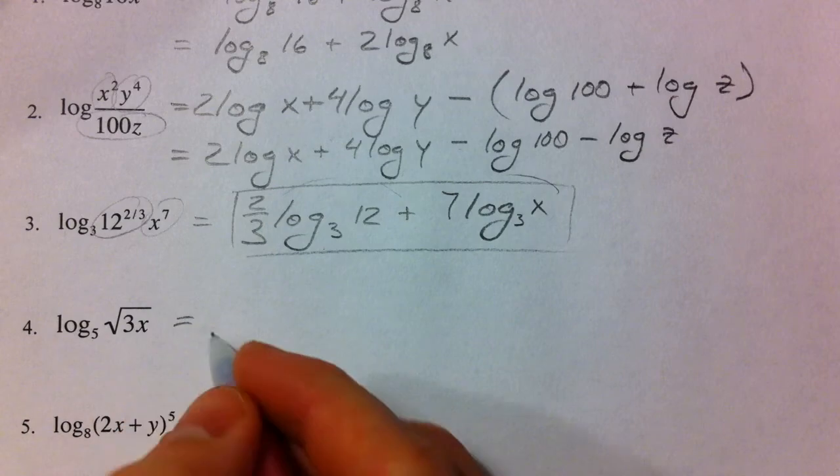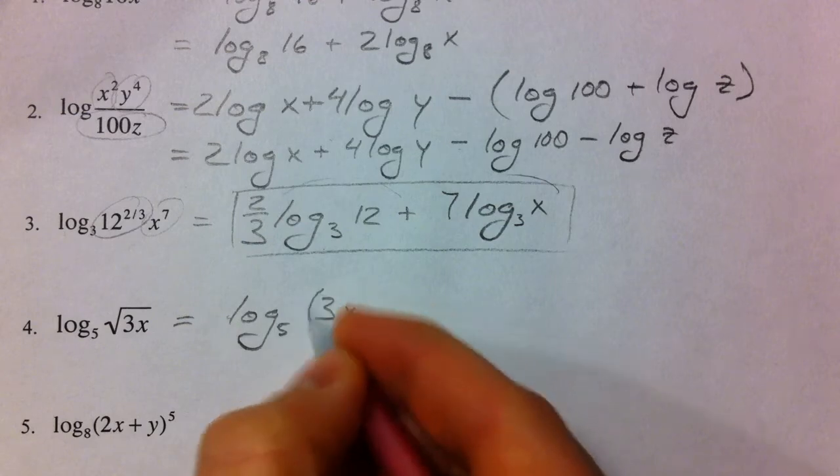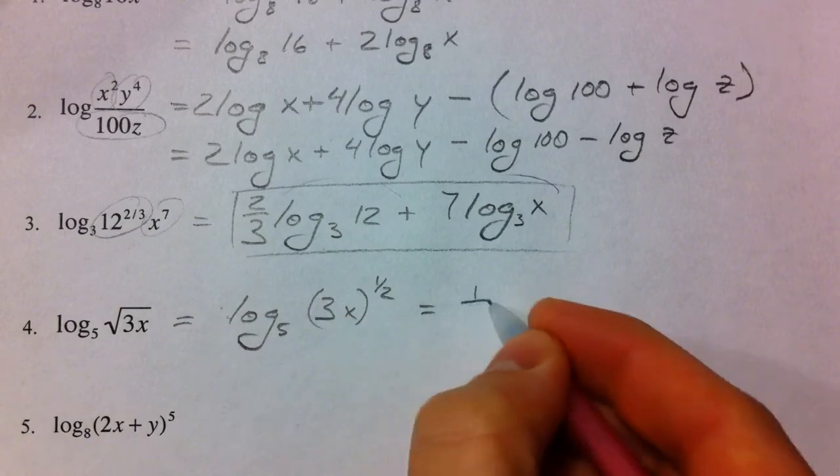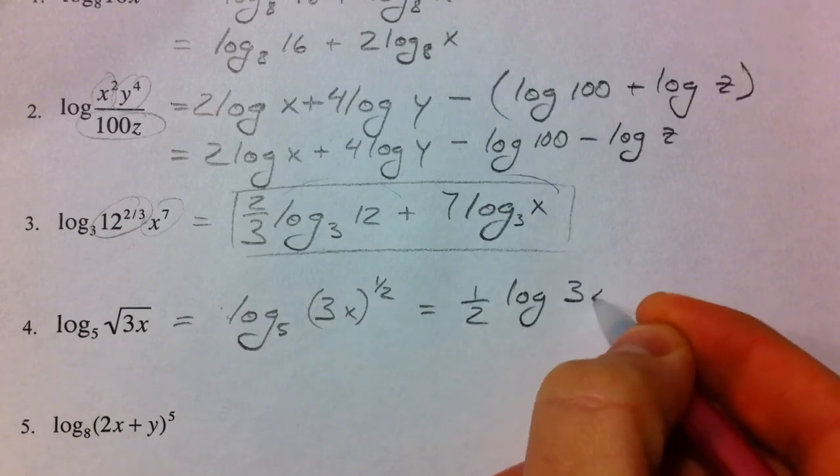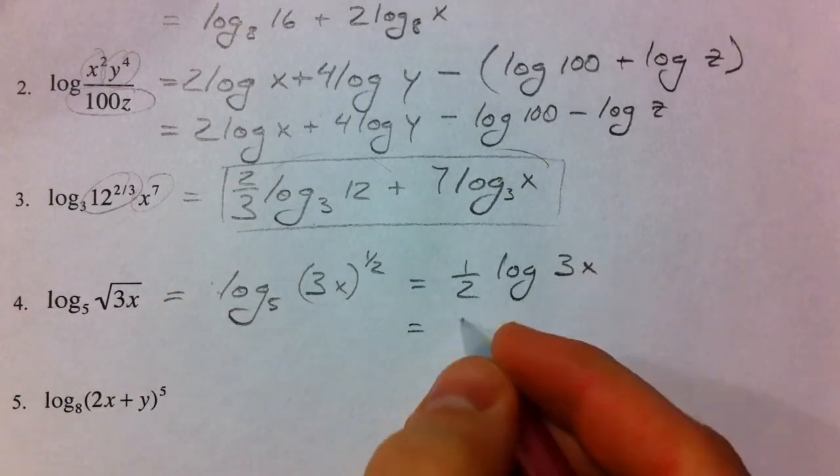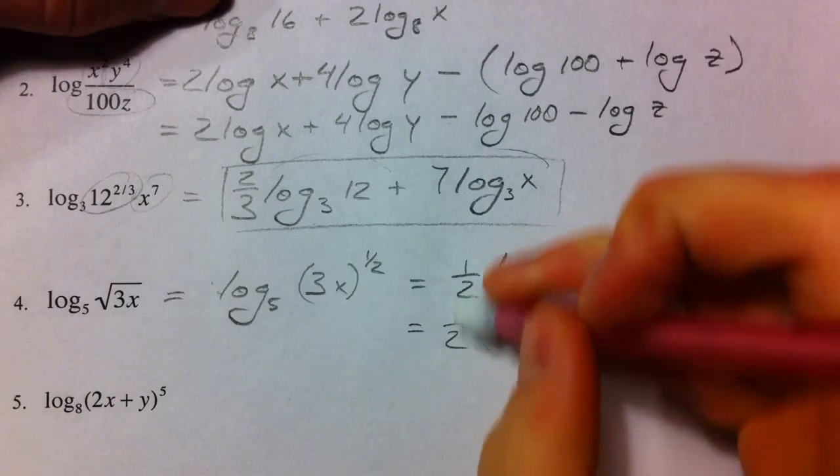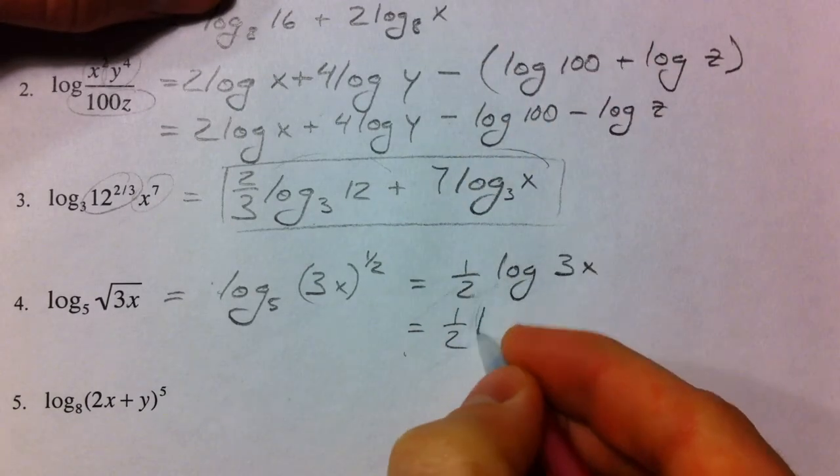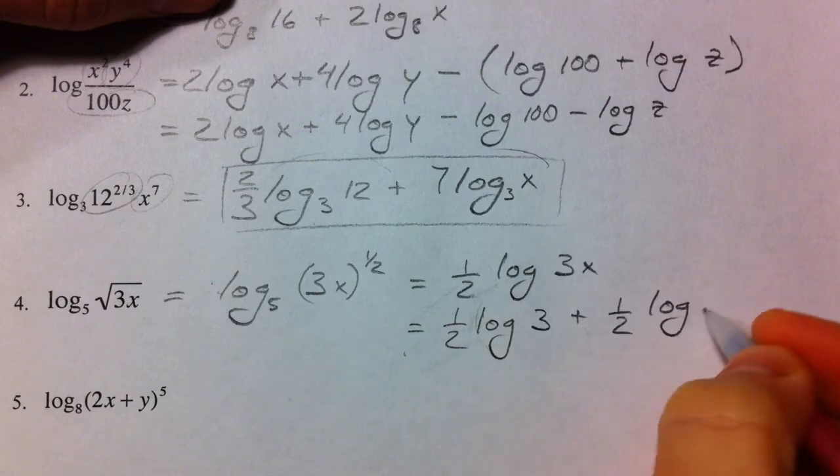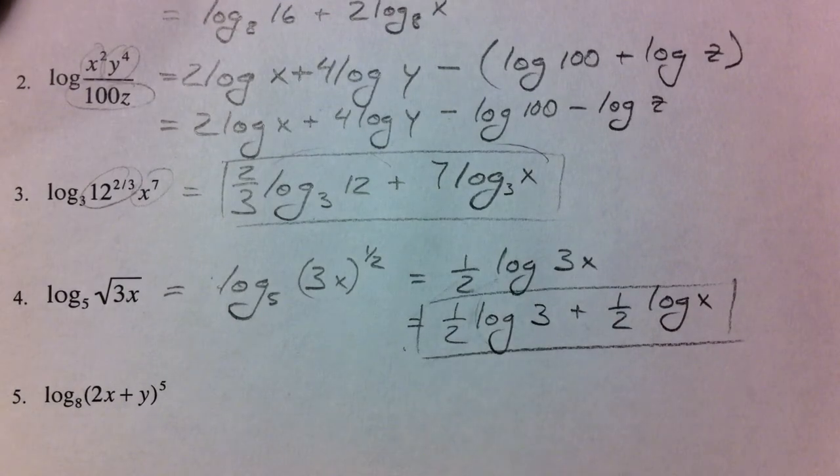Now, this one's slightly different. Because, the square root, if you remember, represents the 1 half power. And, so, what we're going to do is we're going to bring the 1 half down in front. 1 half times the log of 3x. Because, the 1 half applies to both the 3 and the x. And, so, if we separate them now, you can have a 1 half in front of, with parentheses. Or, you could just write 1 half in front of both of them. So, 1 half log of 3 plus 1 half log of x. You could also factor out the 1 half and it would have the same effect.